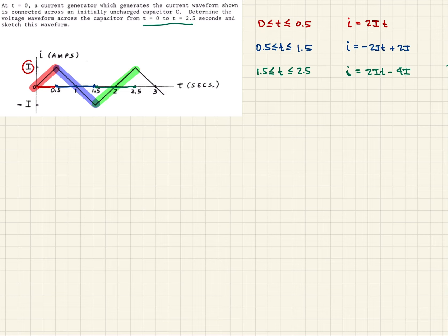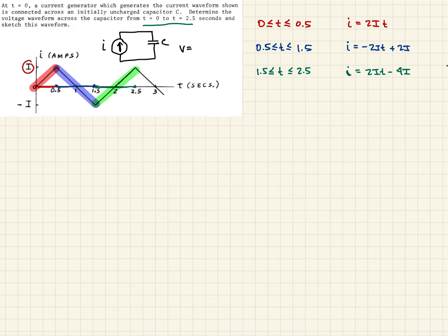Now we've characterized the waveform from the current generator. We need to recall that if we have this current source connected to our capacitor C, with current I, then the voltage across the capacitor is going to be 1 over C times the integral over some time of I dT. That's what we'll use to determine the expressions for the voltage waveforms across the capacitor.